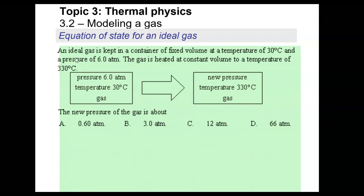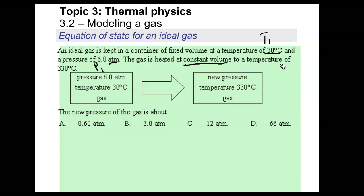Let's take a look at one more question. An ideal gas is kept in a container of fixed volume at a temperature of 30 degrees Celsius at a pressure of 6 ATM. ATM is atmosphere — it is a unit of pressure, but not the SI unit of pressure. The initial temperature is 30°C, I'll call this T1. The original pressure is P1. The gas is heated at a constant volume — that's important. It's also sealed in a container so the amount of gas is not changing. It's heated to 330°C, which I'll call T2.